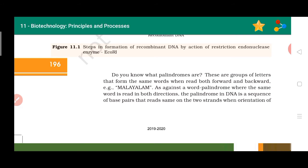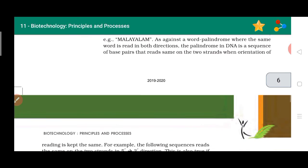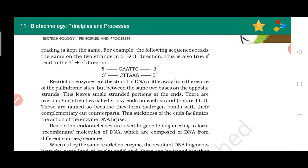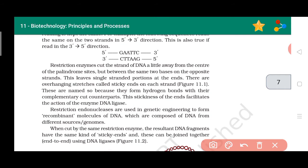This palindromic sequence reads the same forward and backward. In our biotech book, the example given is G-A-A-T-T-C on one strand and C-T-T-A-A-G on the complementary strand. Reading backward gives G-A-A-T-T-C — that is forward, and G-A-A-T-T-C is also backward in the 3' to 5' direction. Both directions are similar. That is why it is known as a palindromic sequence.